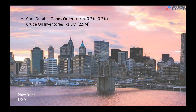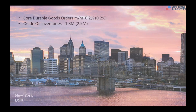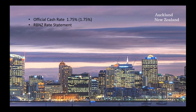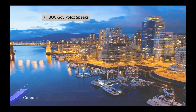We had durable goods orders coming in on forecast, indicating that solid demand is continuing. We also had crude oil come in at negative 1.8 million. From New Zealand this morning, interest rates were left unchanged. The RBNZ said that policy will remain accommodative for a considerable period and that the lower currency would help increase tradable inflation for the nation. As a consequence, the Kiwi dollar has dropped off sharply this morning.